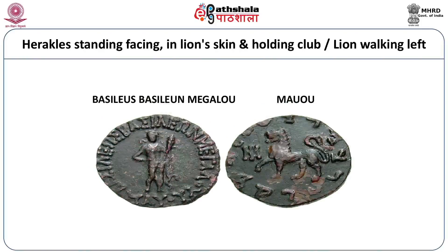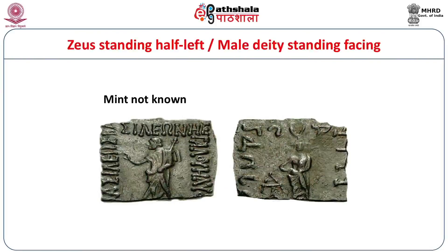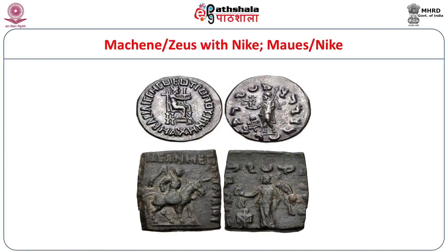Another interesting coin type of Mawas features Heracles — he uses the reverse device of the Indo-Greeks as his obverse, with Heracles standing facing, holding a club and wearing a lion skin, and on the reverse a lion walking to the left. The device of Zeus standing half-left with a male deity facing was also used. A very important coin type found in Mawas's coins is the representation of Machini. She is sitting on a throne and on the reverse you have Zeus with Nike. Machini is not an Indo-Greek name, so perhaps she was from some Scythian family, and the Mawas group probably had a matrimonial alliance with her. Therefore she is represented on the obverse with Zeus with Nike on the reverse.